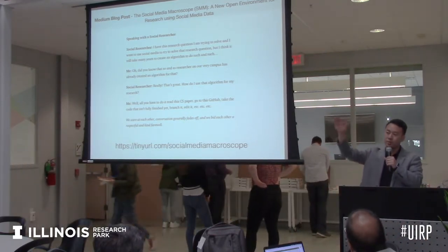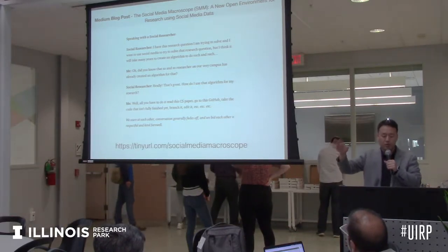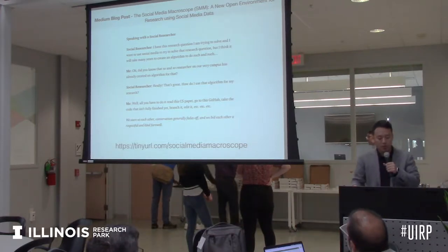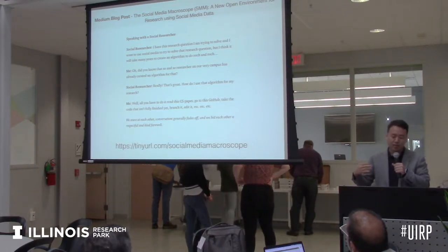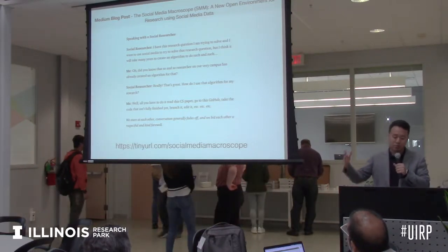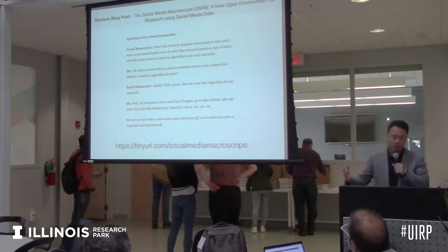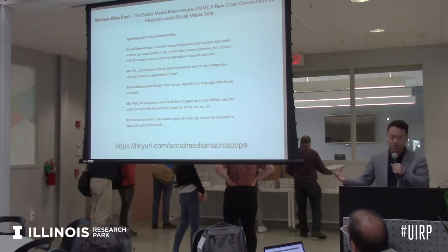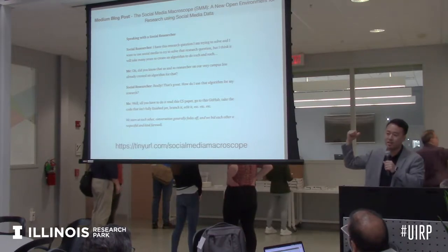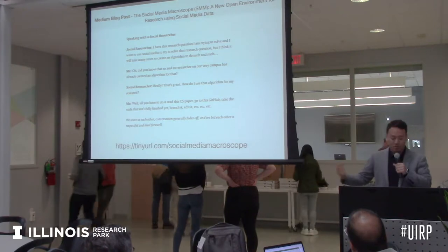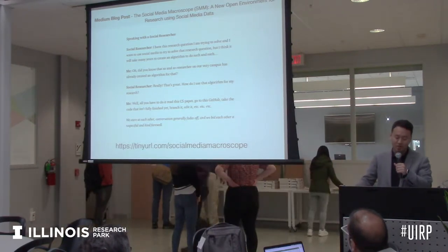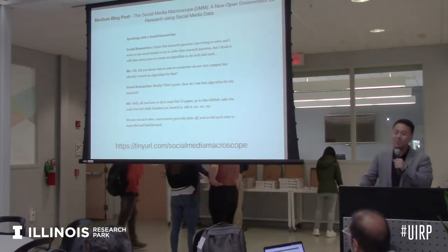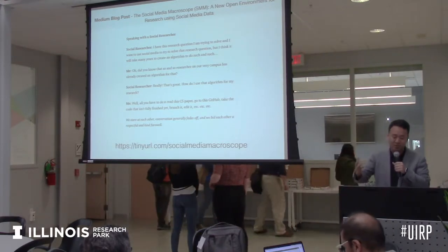While I was doing my doctorate, I spanned between North Campus and South Campus frequently. When speaking with a researcher that doesn't have a computer science background, I'd have a conversation like this: they'd say, 'I have a research question I want to solve using social media, but I think it'll take many years to create an algorithm.' And I would say, 'Did you know there's an algorithm created by a researcher right on this campus that does exactly that?' They'd say, 'This is amazing, how do I use it?' And I'd say, 'All you have to do is read this research paper, go to this GitHub, take the code that's not fully finished, branch it, edit it...' And then we'd stare at each other, smile, conversation fades off, and we'd say goodbye.